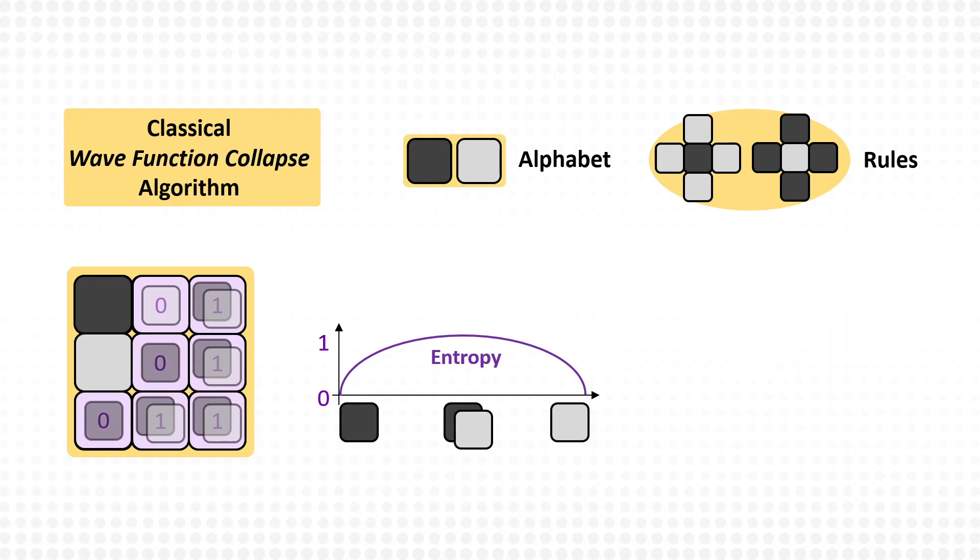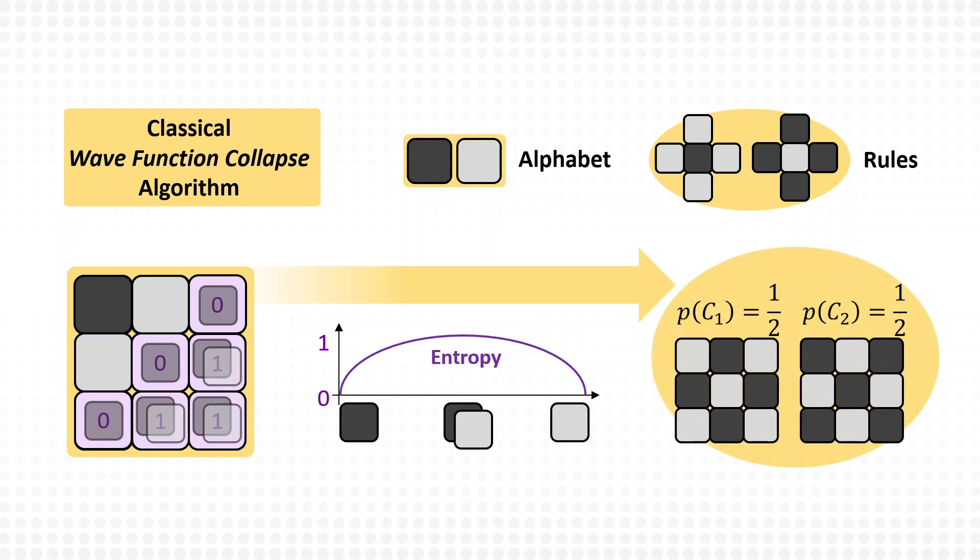This process continues iteratively until all tiles are defined. In the end, two different checkerboard images can be generated with this method that will emerge with the same probability of 50%. This is the basic idea of the classical wave function collapse algorithm.